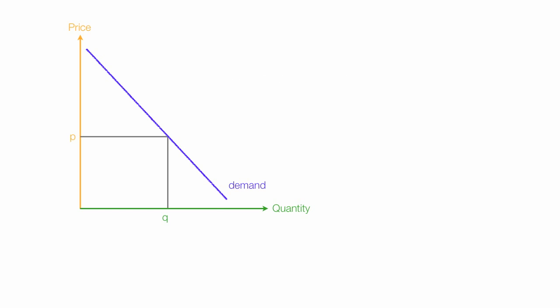Total revenue is equal to quantity times price, or Q times P — I can write this as QP. Now if I change price just a little bit — it doesn't matter if positive or negative, it's just change — the new price is price plus the change in price, and the new quantity becomes quantity plus the change in quantity.